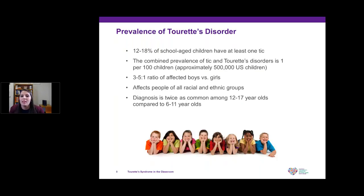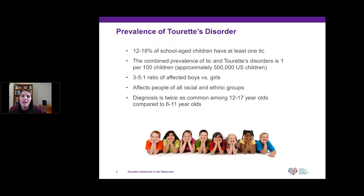Tourette's affects 12 to 18 percent of school-aged children, meaning many kids may never have been diagnosed or may not exhibit tics. The prevalence of diagnosed tic disorders is about 1 in 100 kids, so they do come up in school settings a lot. It affects boys at a three-to-five-to-one ratio and affects all racial and ethnic groups. Interestingly, it's more commonly diagnosed among 12 to 17-year-olds than six to 11-year-olds, yet tics typically emerge between ages five and seven — suggesting a significant delay in identification and diagnosis.